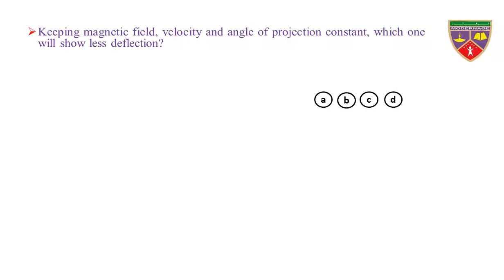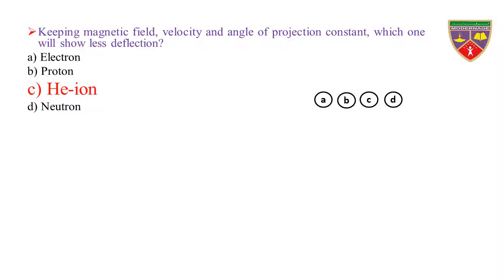Keeping magnetic field, velocity, and angle of projection constant, which one will show less deflection? Option A, electron. Option B, proton. Option C, helium ion. Option D, neutron. The key is helium ion. Therefore, the correct option is C.